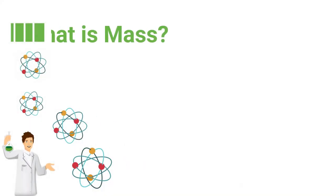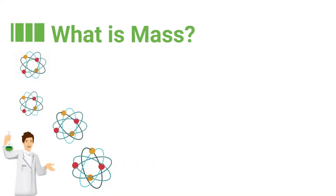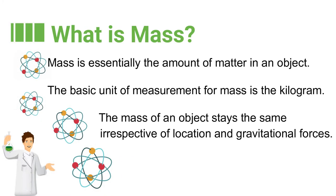What is mass? Mass is essentially the amount of matter in an object. The basic unit of measurement for mass is the kilogram. The mass of an object stays the same irrespective of location and gravitational forces.